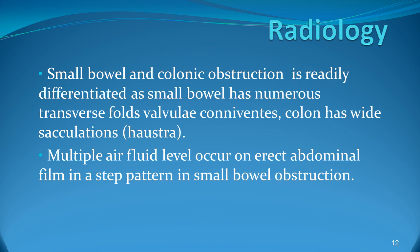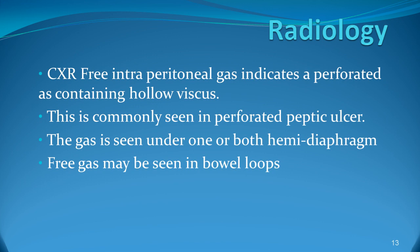X-ray is very important to diagnose colonic pathologies. A plain film will show small bowel obstruction — small bowel has numerous transverse folds called valvulae conniventes. The colon has wide haustra. Multiple air-fluid levels occur in the erect abdominal film in a step pattern in small bowel obstruction. Chest X-ray showing free intraperitoneal gas indicates a perforation of a gas-containing hollow viscus, commonly seen in perforated peptic ulcer. The gas is seen under one or both hemidiaphragms.